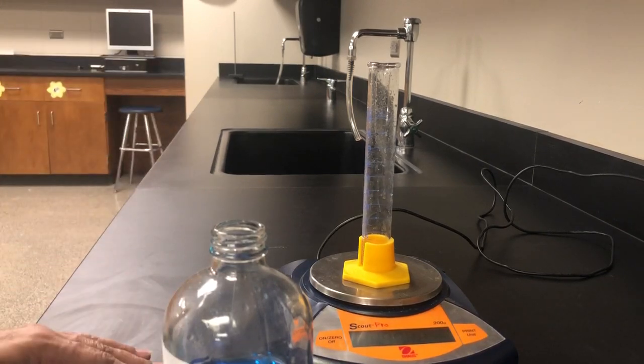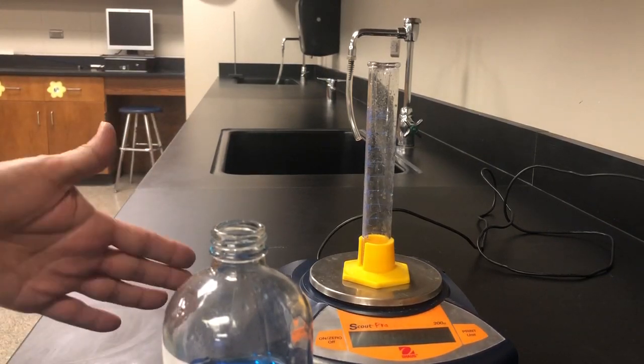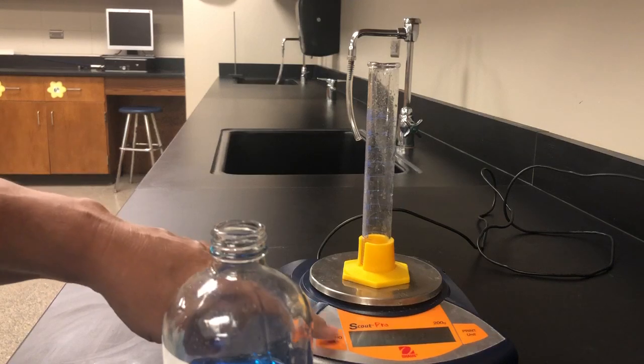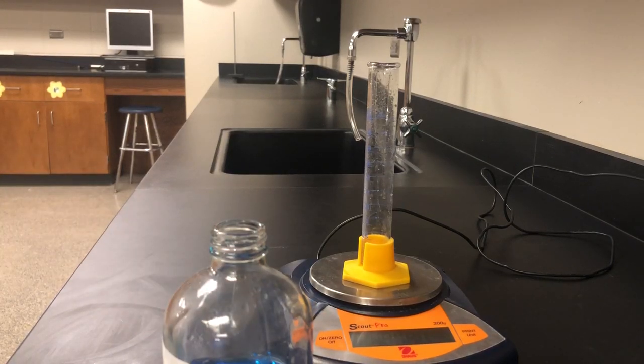Now over here on the electronic balance, I have a graduated cylinder that goes up to 50 milliliters and the graduations go by ones. I'm going to hit the tare button to zero it. So now it says 0.00 grams.